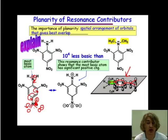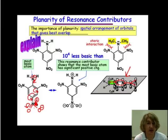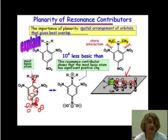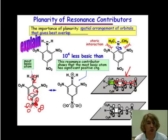We can compare this with the molecule on the right — the one with two methyl groups on the nitrogen. There is a significant steric interaction between those two methyl groups and the nitro groups ortho to it on the benzene ring. This significant steric interaction is going to cause these methyl groups to twist. We're going to spin around that carbon-nitrogen single bond and rotate it in space to lessen the effect of those methyl groups bumping into those nitro groups.